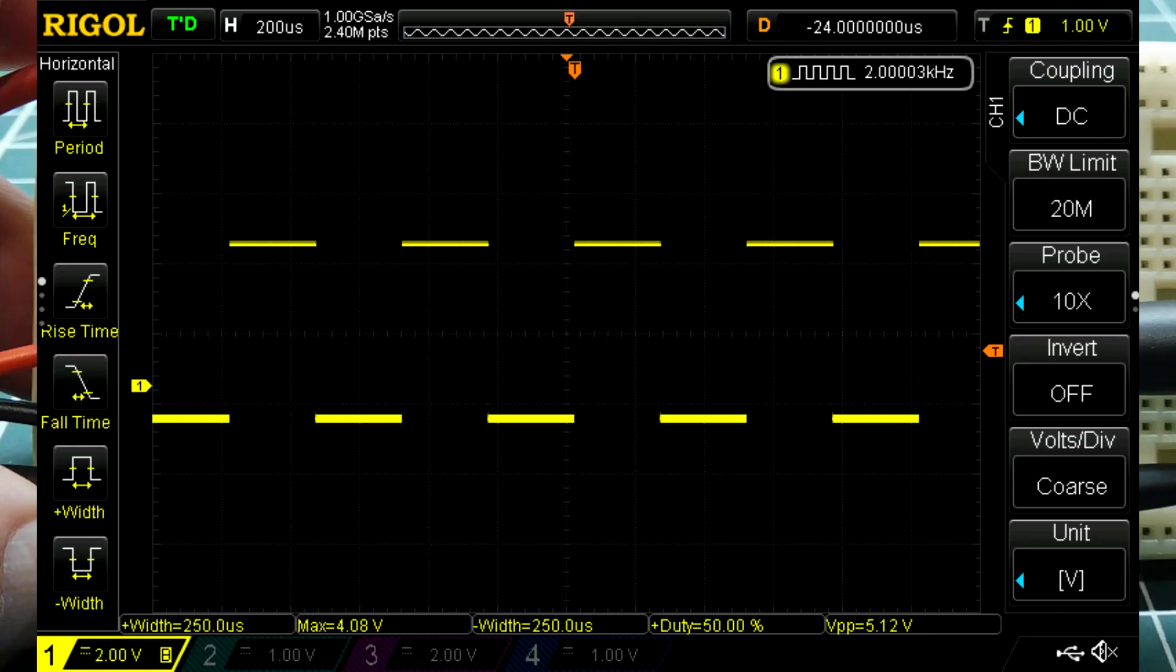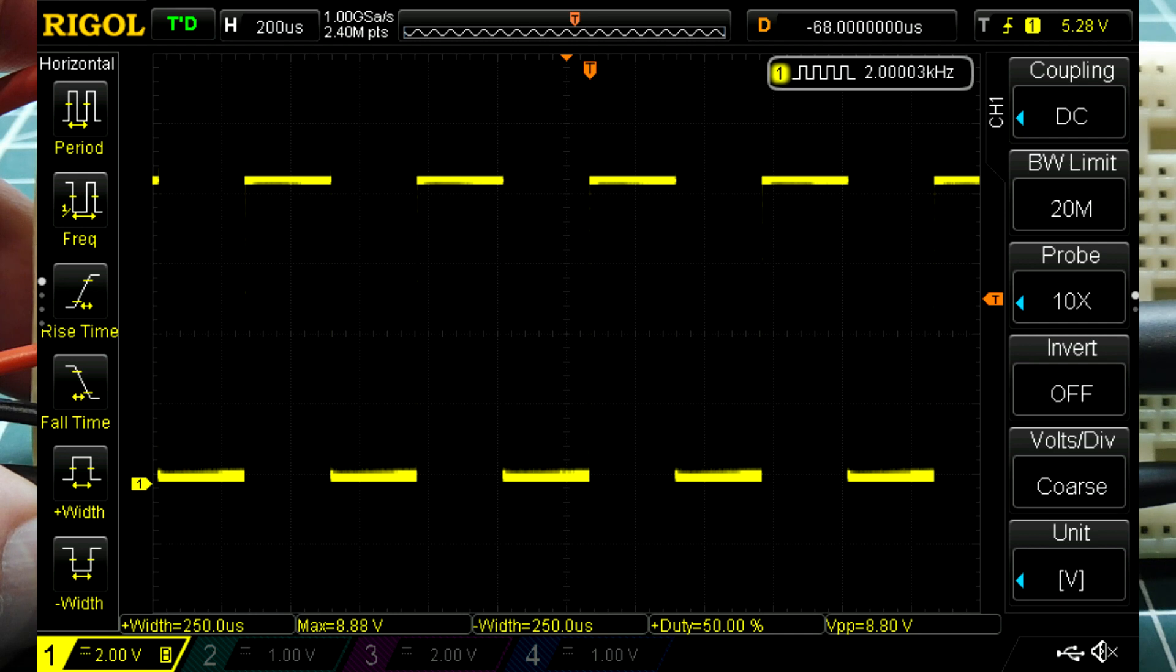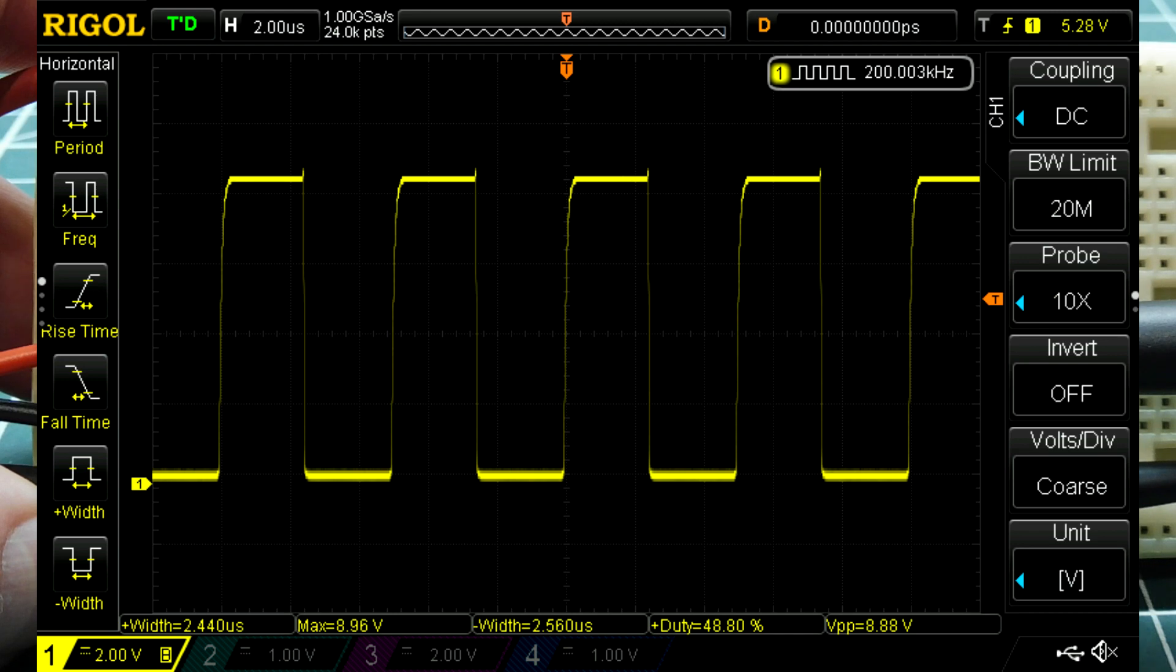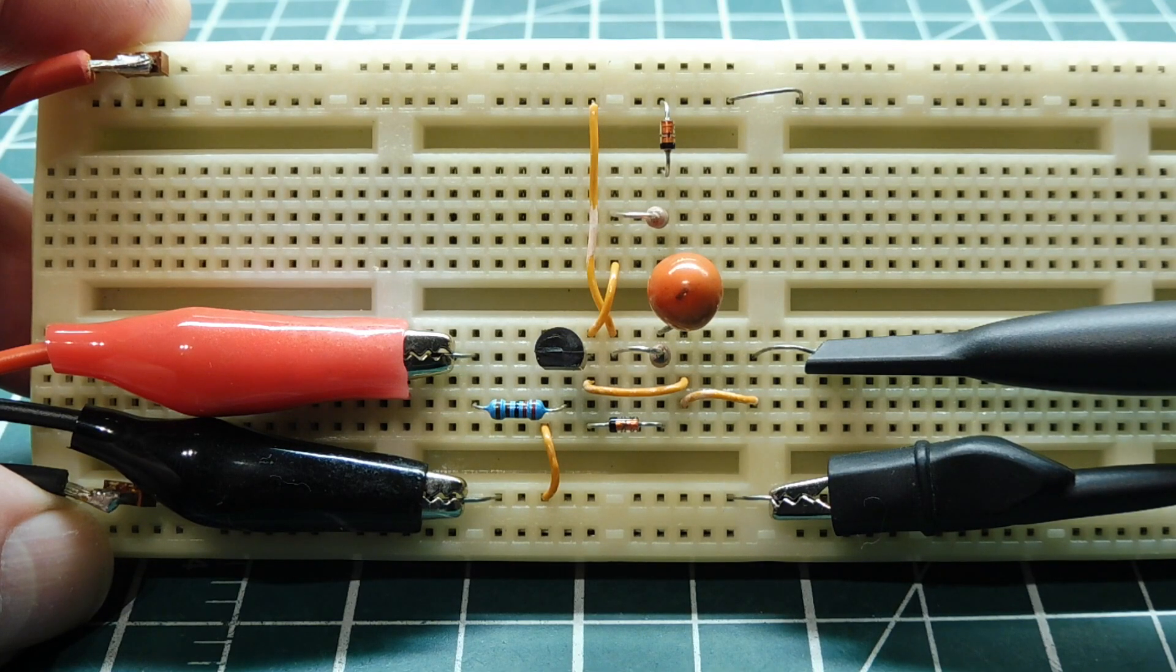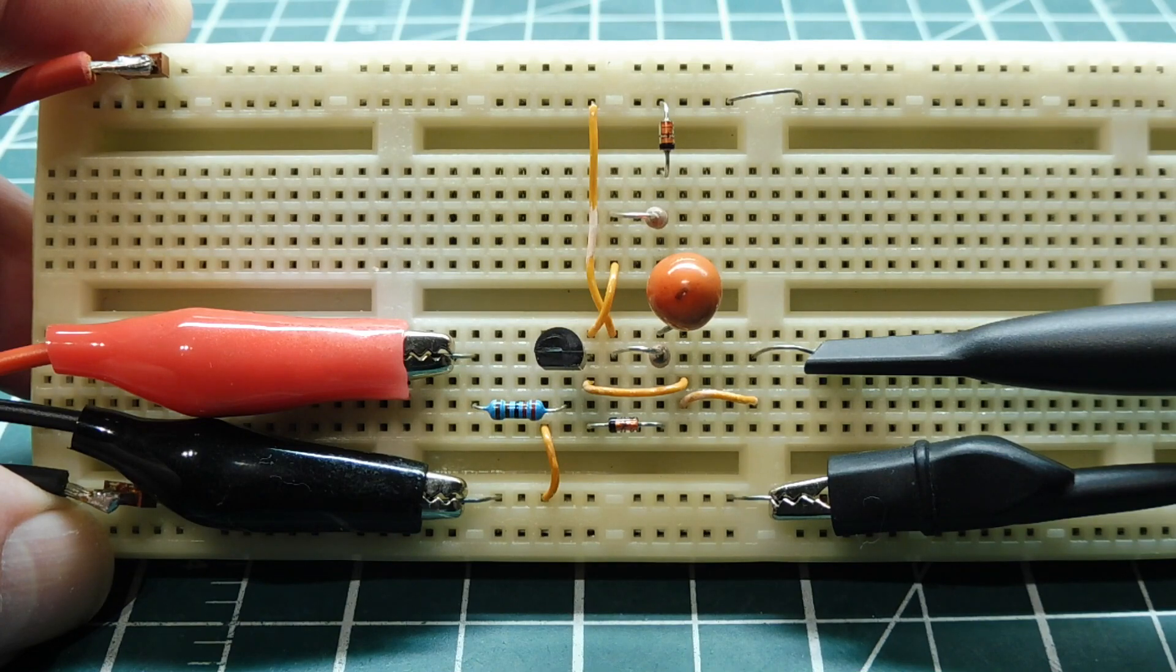So we'll put the scope on the input, and we can see our input is 5 volts peak to peak at 2 kilohertz. Now if we look at the output, we can see we have 8.8 volts peak to peak, 2 kilohertz. I'll bump the frequency up to 10 kilohertz, and you can see the output now is 10 kilohertz, 8.8 volts, and I'll take it up to 200 kilohertz. So we're boosting our signal, our 5 volt peak to peak signal from our input, and we're getting 8.8 volts peak to peak on our output.